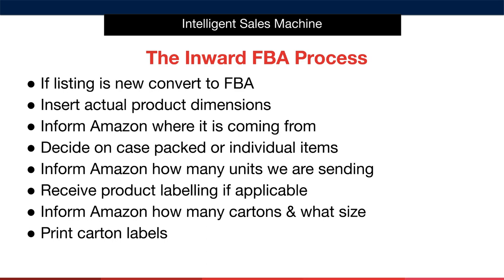We're going to pick up where we left off with a new listing — we were at the stage of being fulfilled by ourselves. Our first step is to convert this listing over to FBA. One of the first things we will be asked for is the actual product dimensions, which we collated earlier. This allows Amazon to categorize the product into either standard size or oversize, as oversized products generally go to different fulfillment centers than standard size items.